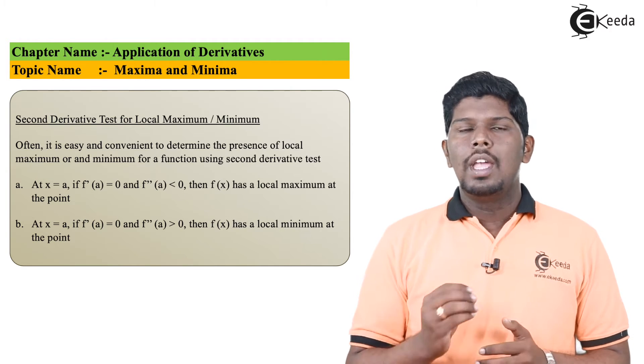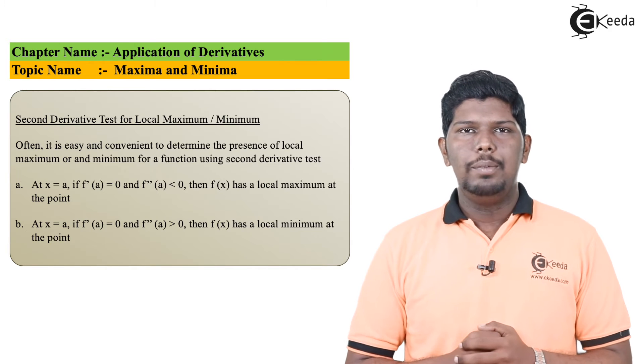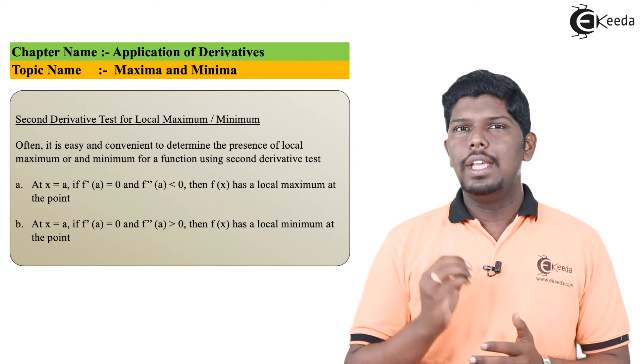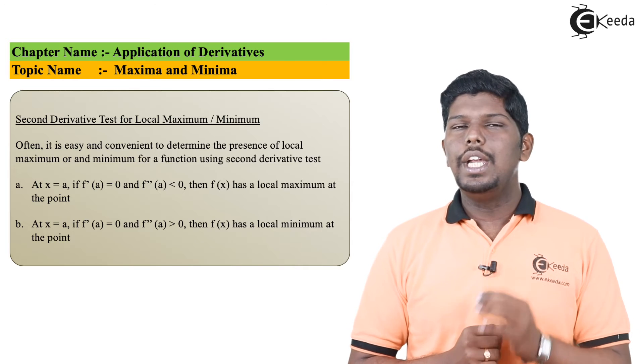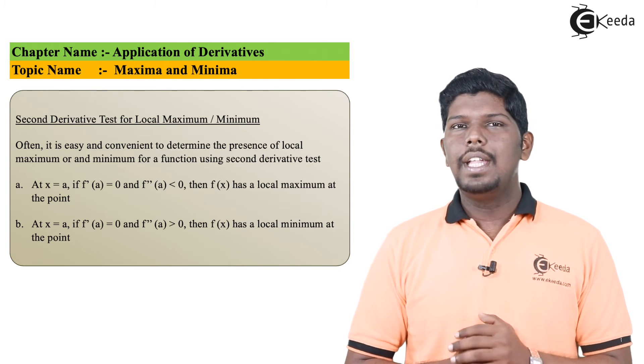Now what is the process? If you need to find the value, say x equals a, the first step that you are going to do is find the first derivative, equate it to 0, and get the value of x.